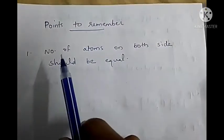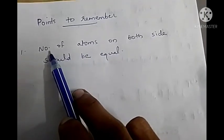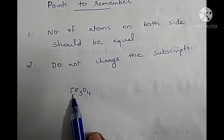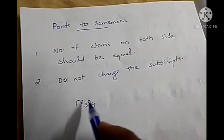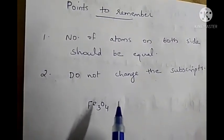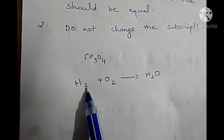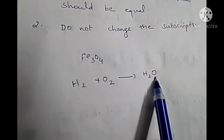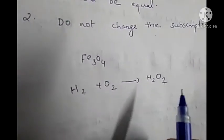Now, some points to remember while balancing an equation. First: the number of atoms on both sides must be equal — always check after balancing. Second: do not change the subscripts. In Fe3O4, the 3 is the subscript of iron and 4 is the subscript of oxygen. We are not supposed to change these numbers while balancing. For example, in H2 + O2 → H2O, you cannot change H2O to H2O2 to balance oxygen — that would be wrong.